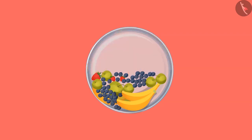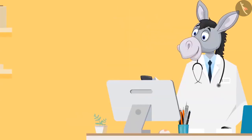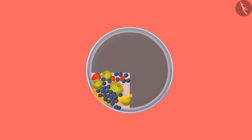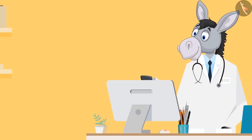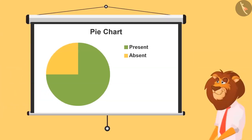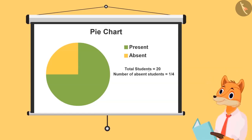If the priest offers all the flowers to the god, how much part of the plate will remain empty? Half. Absolutely correct. And if this much fruit is given in the prasad, then how much full will the plate remain? One-fourth fruits remain. Very good. This pie chart shows how many students came to class today. If the total strength of the class is 20, then how many students are absent today? These are the present kids and these are the absent kids. Here we'll find one-fourth of 20 because absent kids are one-fourth of the total chart. Half of 20 is 10 and half of 10 is 5. So total 5 students are absent today.